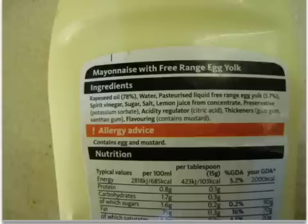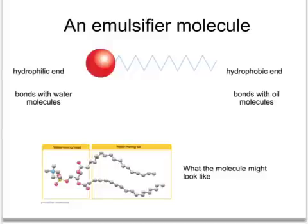The emulsifier is found in the egg yolk and to a certain extent in the mustard ingredients. Mayonnaise contains emulsifier molecules which have two distinct ends. One end, usually drawn as a ball on exam papers, is the hydrophilic end — it attracts to water molecules. The other end, usually shown as a zig-zag part of the molecule, is known as the hydrophobic end. This end does not attract water; it attracts oil molecules instead.